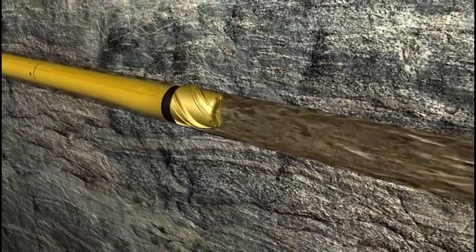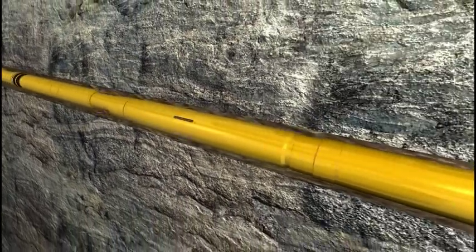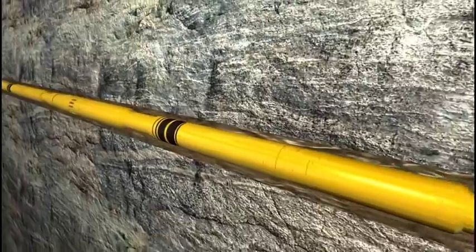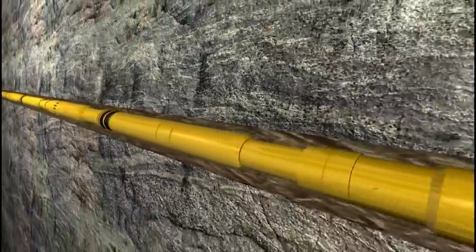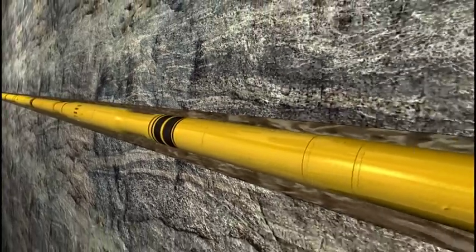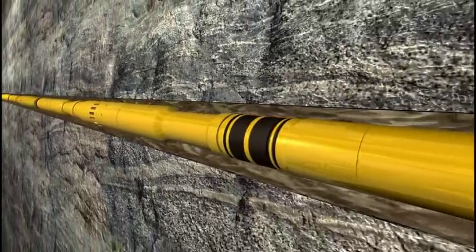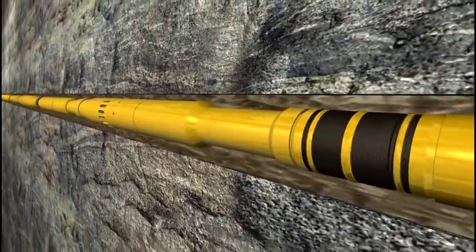The short radius packers and ball activated frack sleeves are strategically placed in the completion liner using casing to place them at the desired depth for maximum efficiency. The Frack Point system is running the well in the closed position like any other typical production liner.